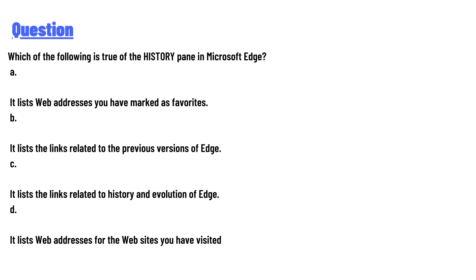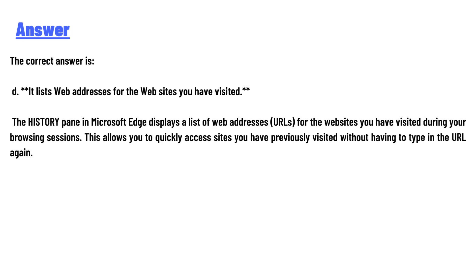D — it lists web addresses for the websites you have visited. The correct answer is D. The History pane in Microsoft Edge displays a list of web addresses (URLs) for the websites you have visited during a browsing session.